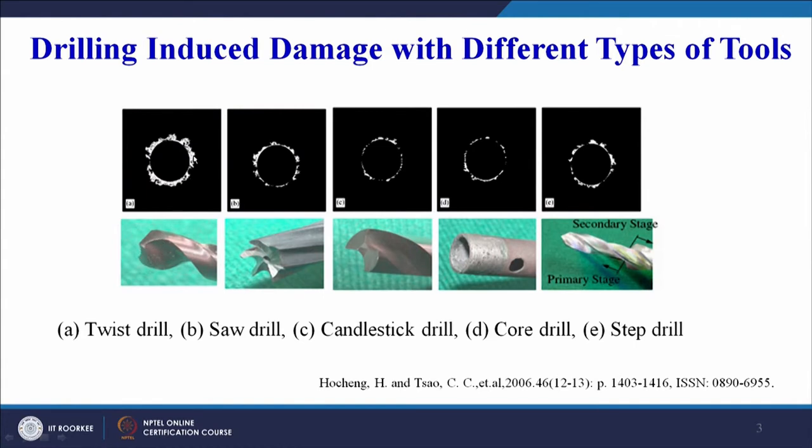A research article published in American Machinist in 1987 by J. A. Miller investigated 17 different drill point geometries and proved that drill point geometry plays a pivotal role in defining the damage around the drilled hole. Here we are showing only five different geometries. The central portion is the actual hole, and around the hole you see the damage. The twist drill, most commonly used for metals, results in maximum damage, whereas modified drill point geometries — saw drill, candlestick drill, core drill, step drill — all lead to lower drilling induced damage.